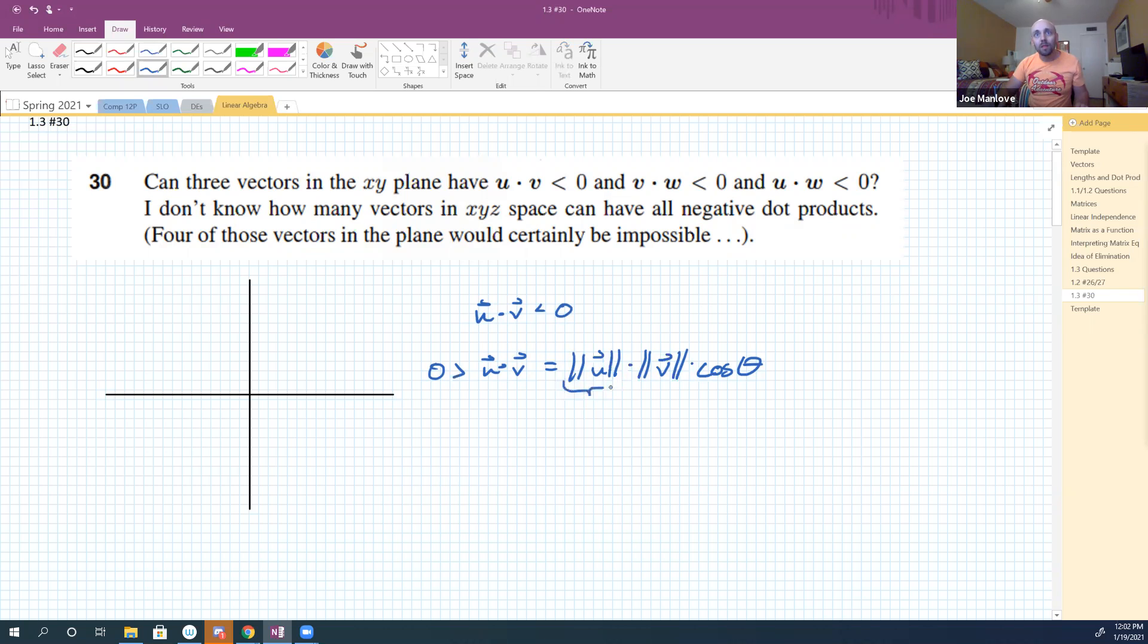Cosine of theta, where theta is the angle between them. Now if zero is supposed to be bigger than this, let's consider some pieces. This piece, u, is positive. That sucker's positive.